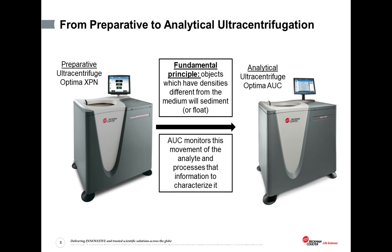Drawing this line from preparative to analytical ultracentrifugation: what prep UC does is separate analytes that sediment differently in the same tube, in the same buffer, in the same experiment. This is because objects with densities different from the buffer medium will either sediment to the bottom or float to the top over the course of an ultracentrifugation experiment. What AUC does is monitor this movement of the analyte and process that information to obtain the thermodynamic parameters of interest. The instrument that does all of this is the Optima analytical ultracentrifuge by Beckman-Coulter.